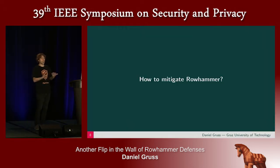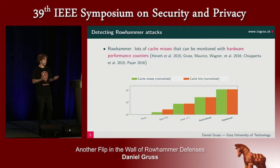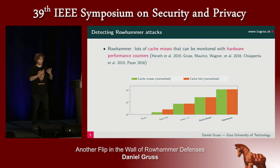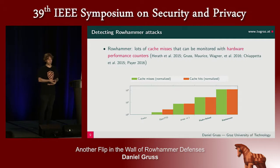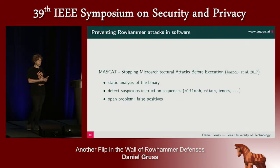The question then is how to mitigate Rowhammer. There have been a bunch of proposals — for instance, detecting Rowhammer attacks via performance counters, because they have way more cache misses than other attacks or benign workloads. So we can probably single them out.